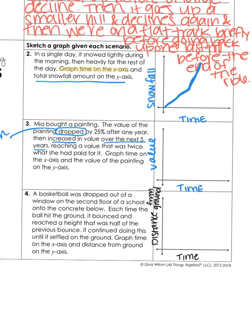So imagine dropping a basketball — if you were standing on the second floor of a building and you dropped a ball, it would start very high up and fall straight down. But it said it bounced — a height that was half of the previous bounce. So if it went down like this, it went halfway back up. Then it dropped back down again, bounced halfway of what it was before, and continued this until eventually the ball just stops.